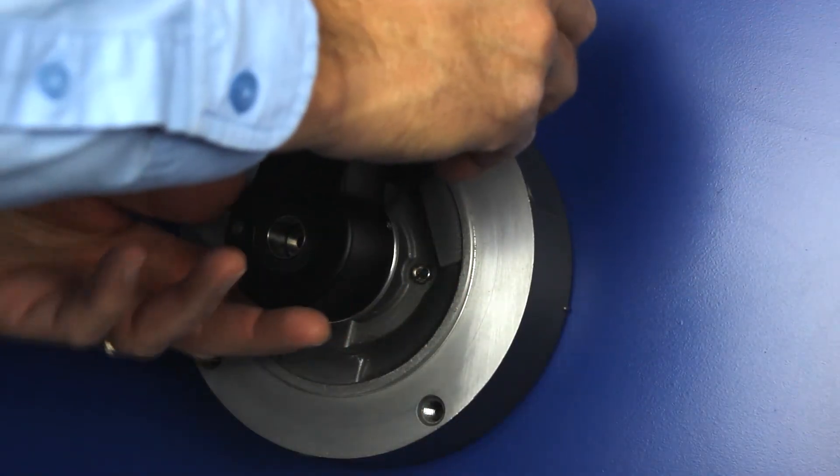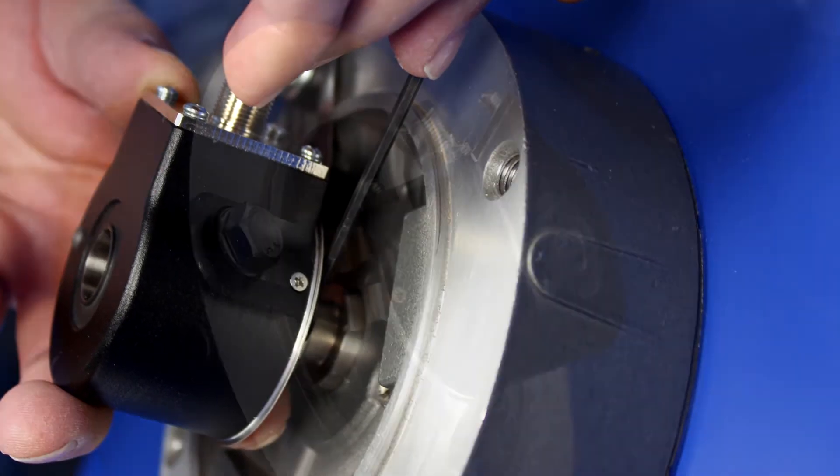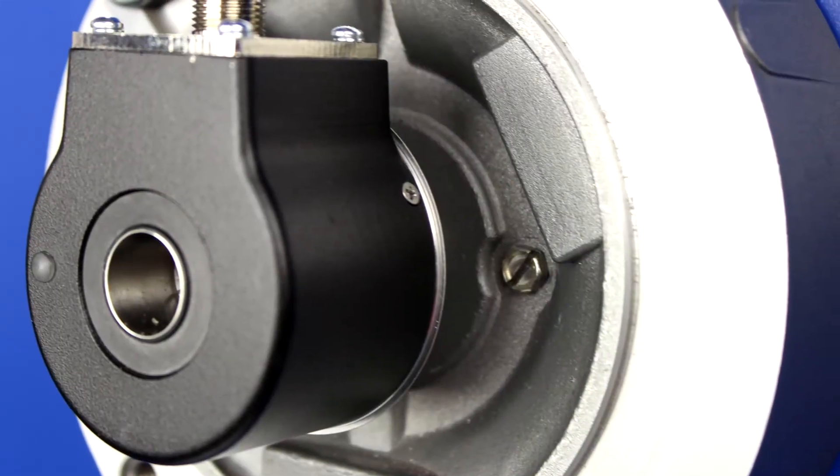Finally, tighten the shaft collar. The encoder can now be connected electrically and made ready for use.